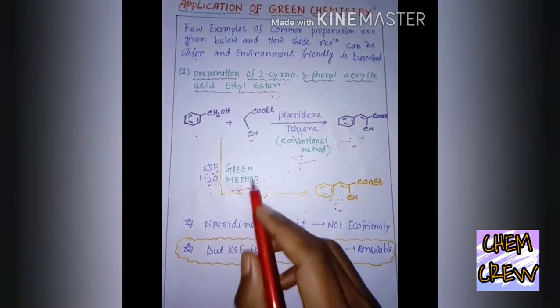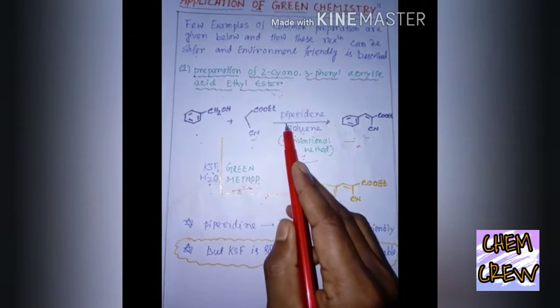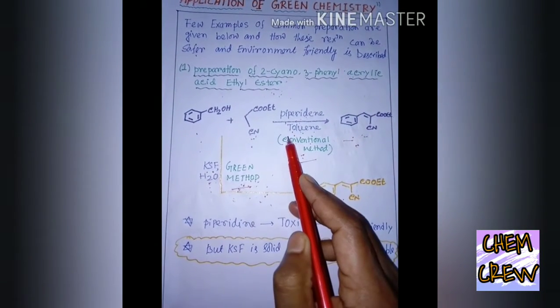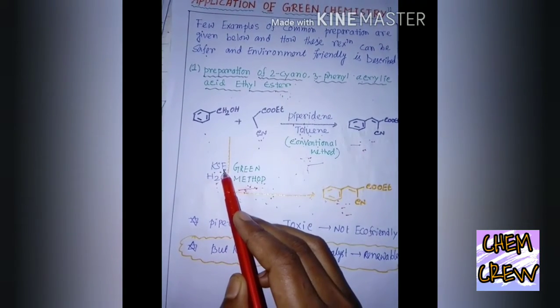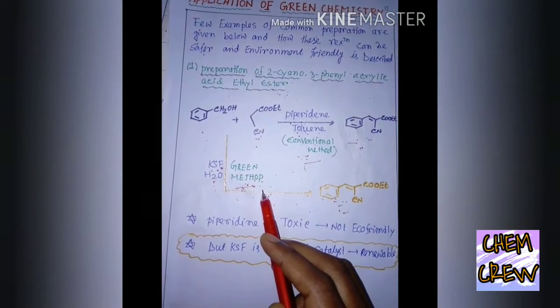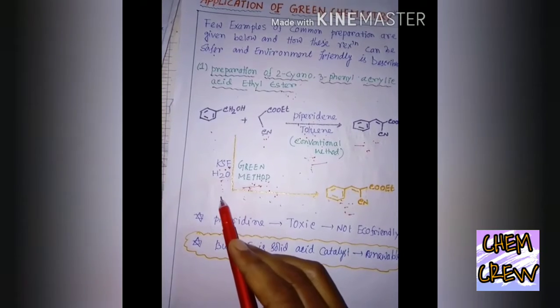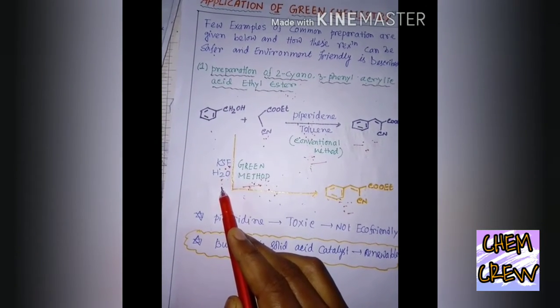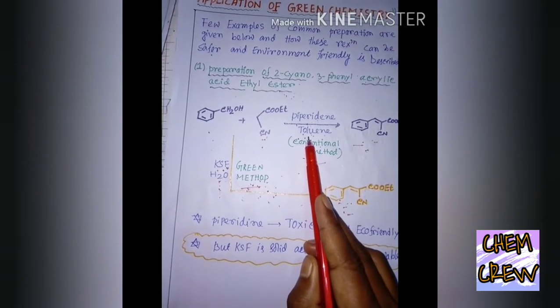we are getting this desired product. Now, in the green method, we replace piperidine and toluene with KSF, which acts as a catalyst in this reaction, and we are using water. Water is a green solvent in the place of toluene.